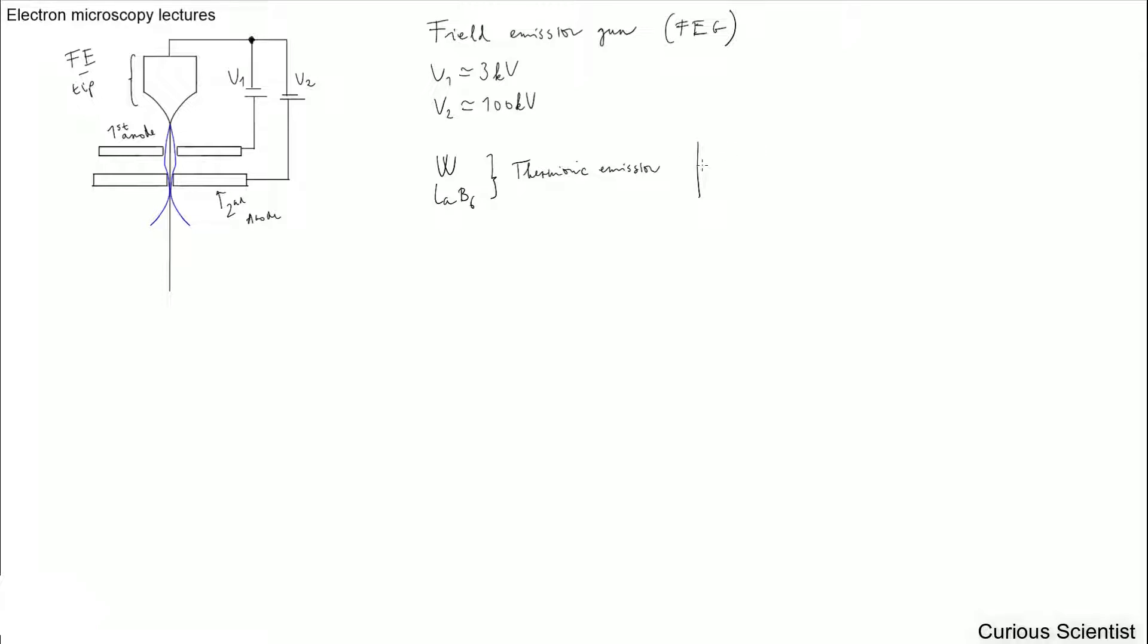But in this case we have a field emission. So I already wrote it down. And then this field emission gun is basically a tungsten filament, but it works a bit differently. So I tried to draw it down.